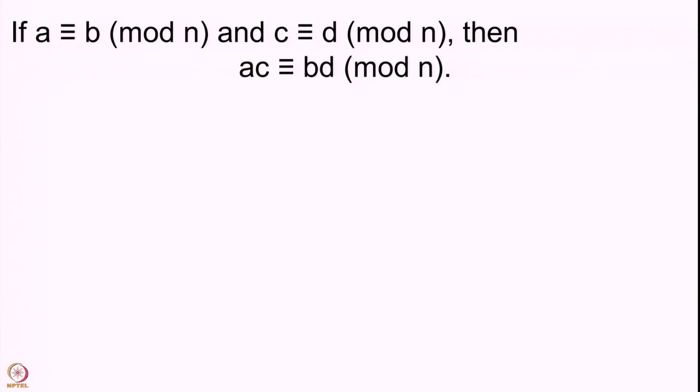Let us turn to the second statement: whenever A ≡ B (mod n) and C ≡ D (mod n), then the product A times C is congruent to the product B times D mod n. Once again I will give you a minute to think about it. Please feel free to pause the video and think about it for yourself — the more you think about these problems for yourself, the more clear these things will be to you.